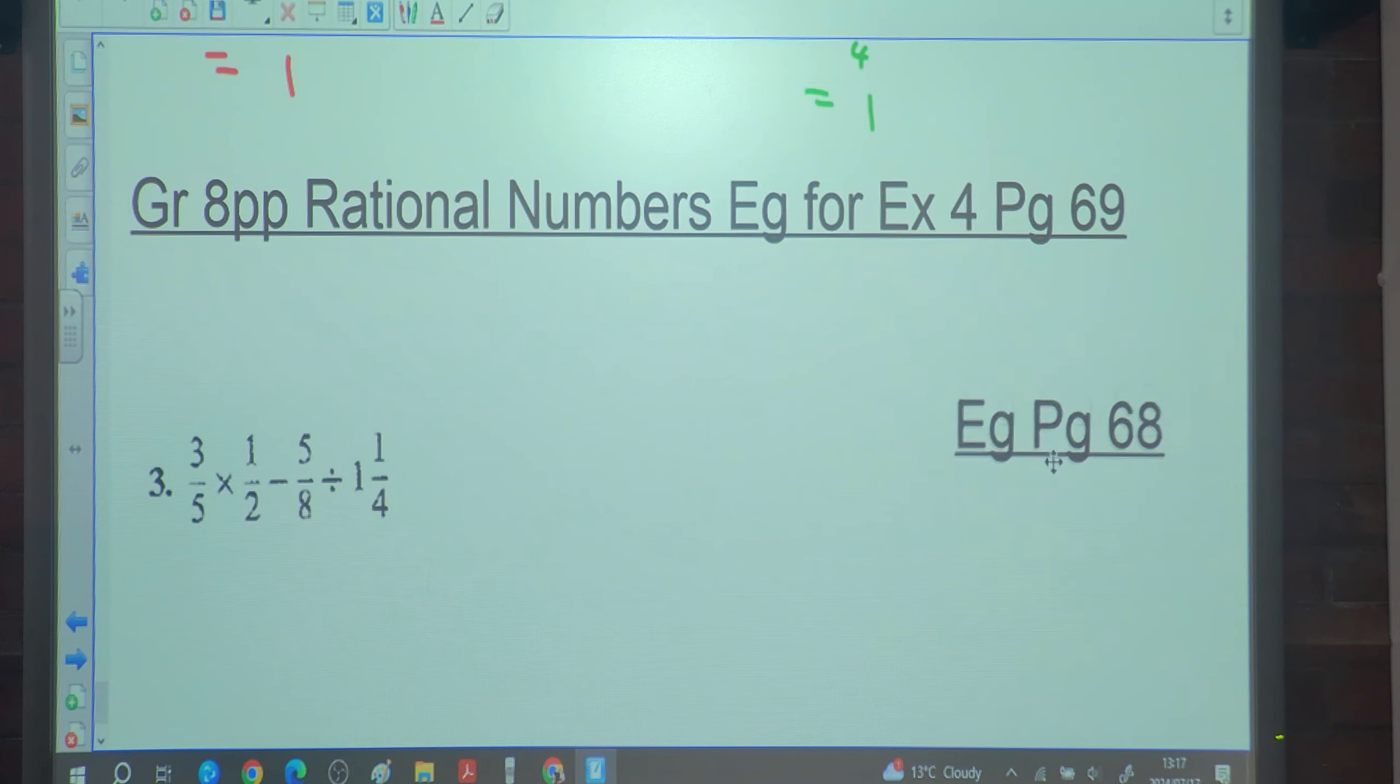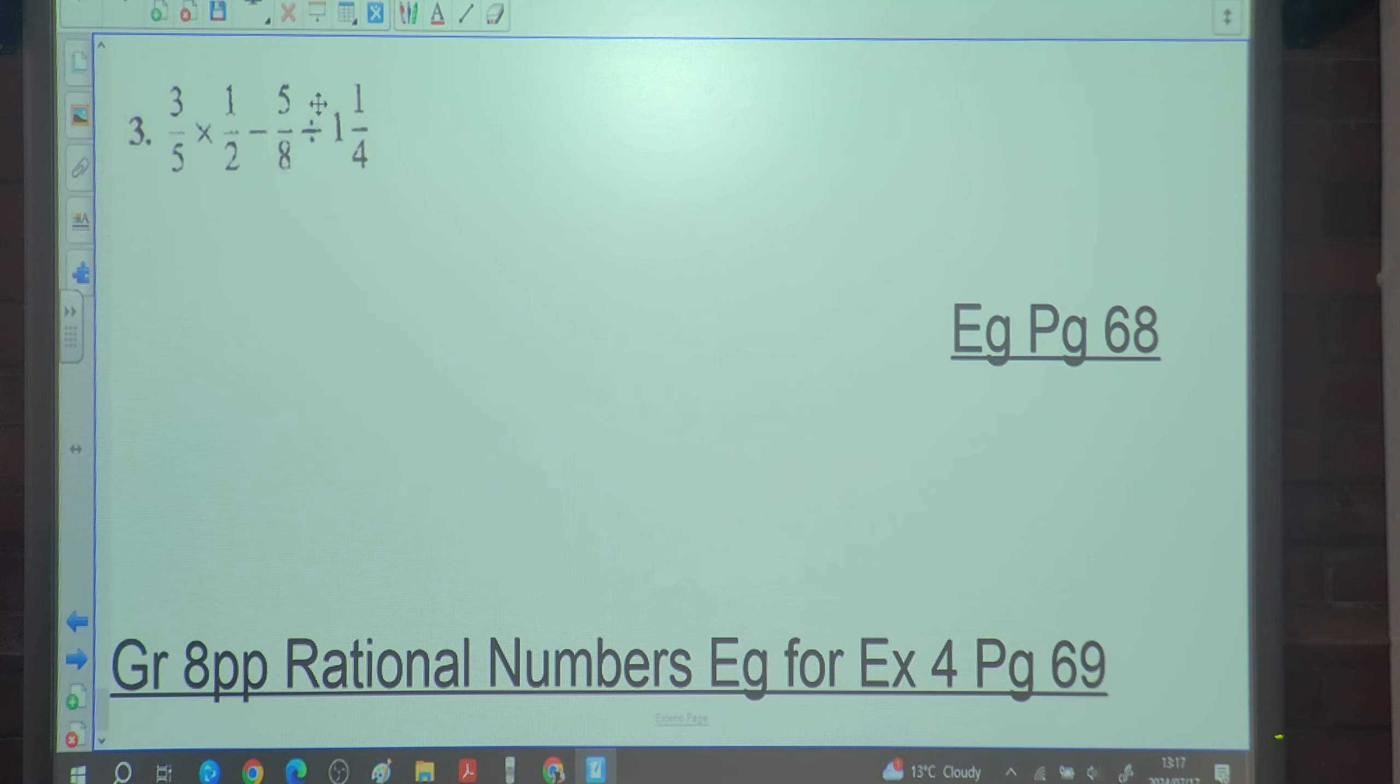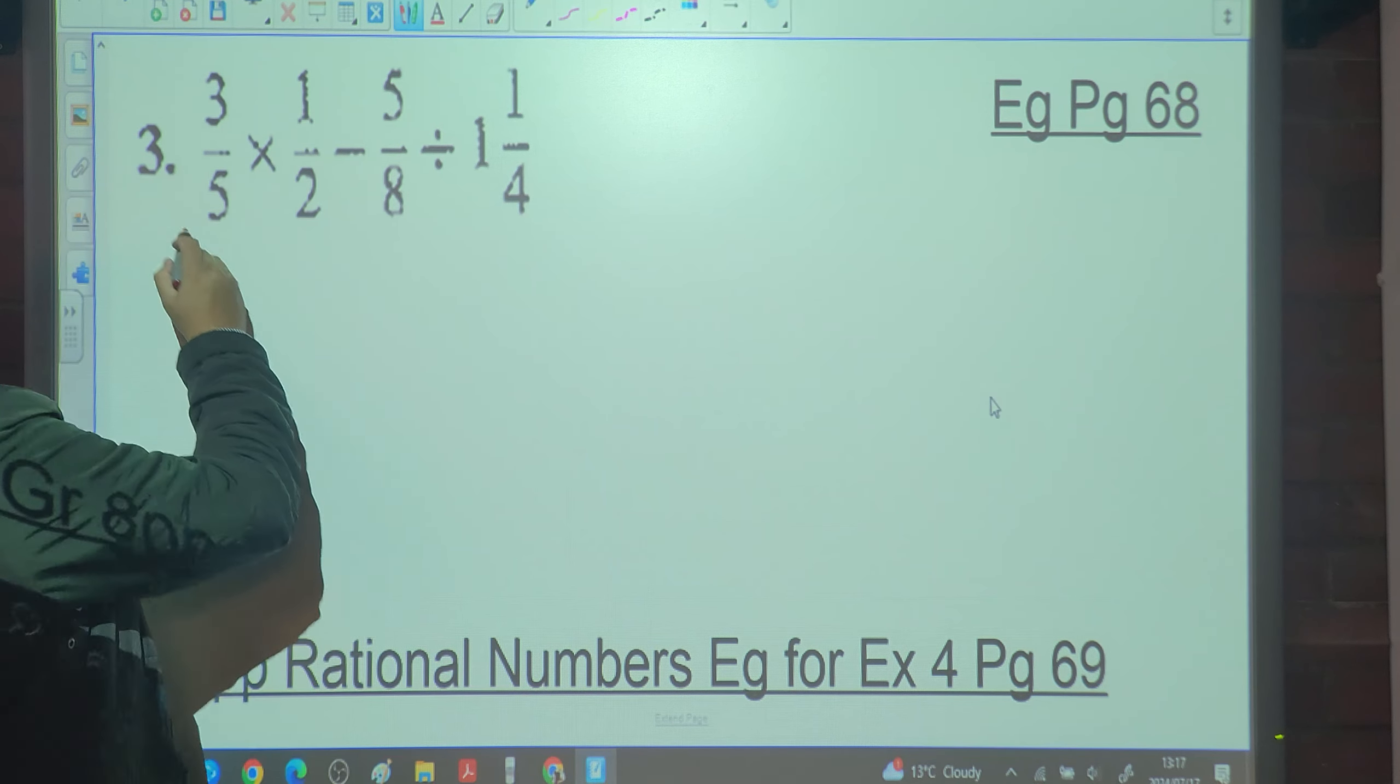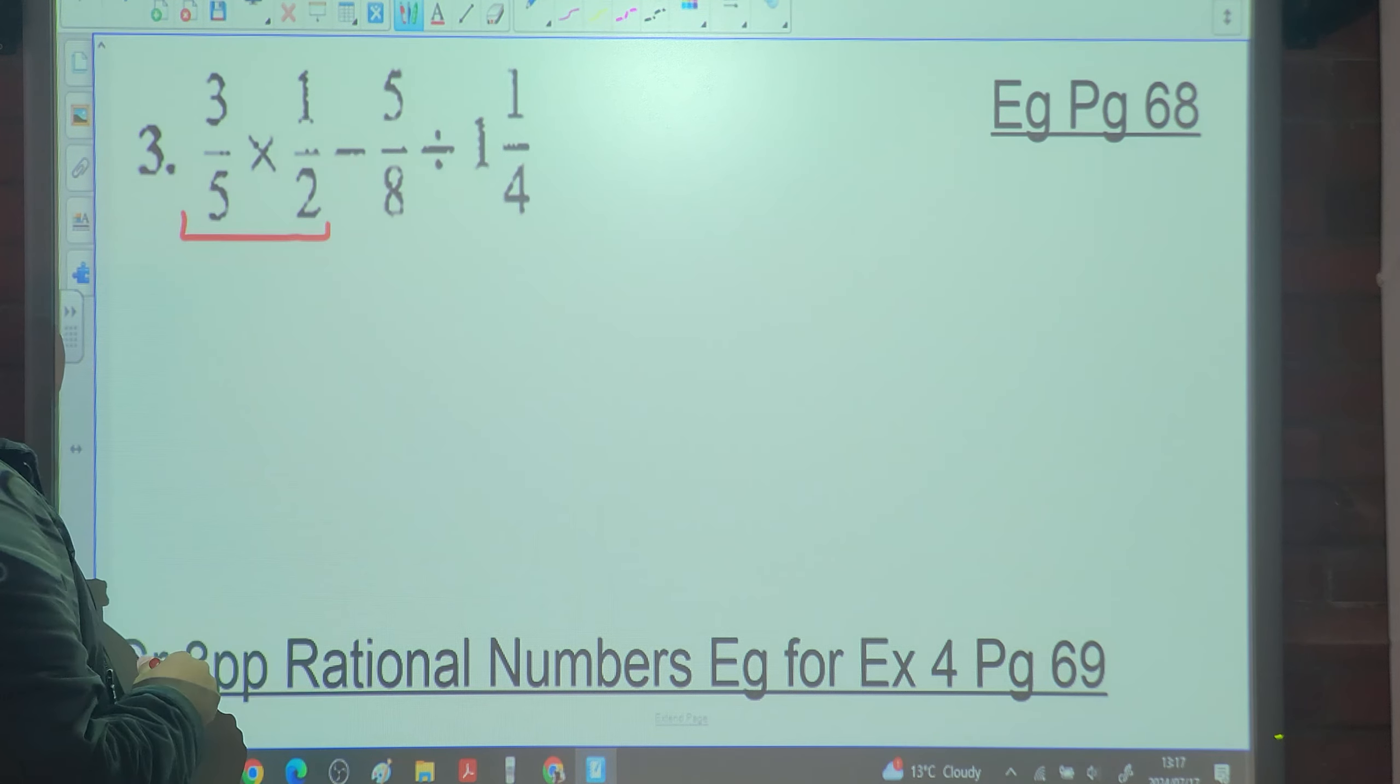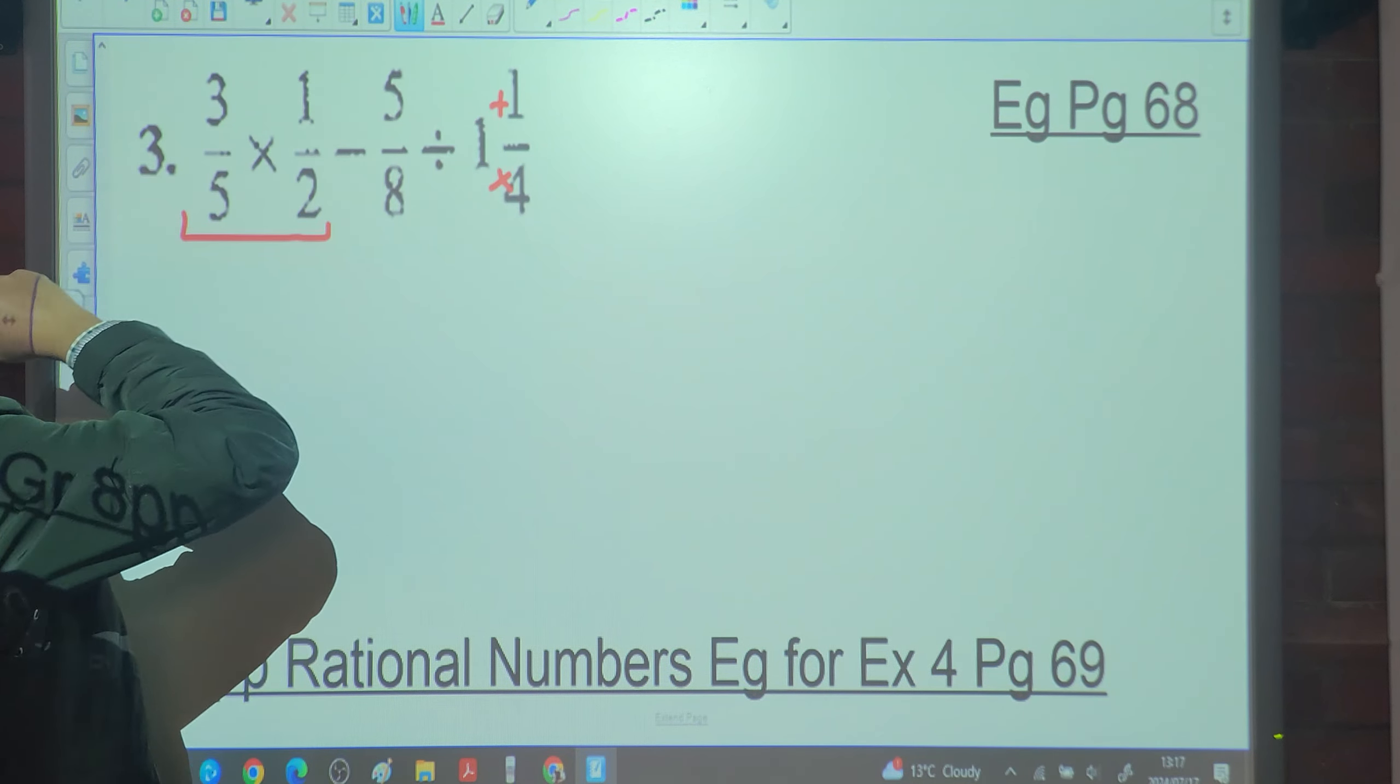Last one for exercise four. We've got three-fifths multiplied by half minus five-eighths divided by one and a quarter. Where do I start? You can do that multiplication here, yes? What can happen with this term? Change that to improper fraction.